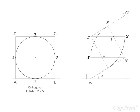Draw two arcs joining 3'-4' and 1'-2' respectively. Similarly, draw two arcs joining 4'-1' and 2'-3' respectively. The ellipse obtained is the isometric view of the circle.